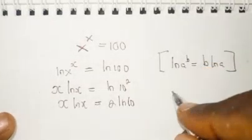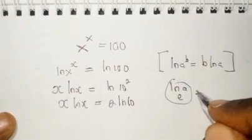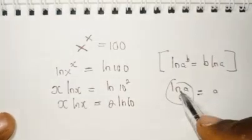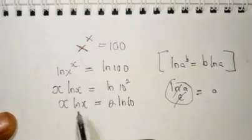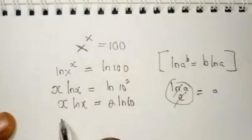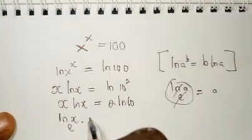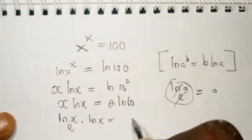I want us to know something: when you have the natural log of a with the base of e, this equals a because both cancel each other. Therefore, we can say this is x to the base e times the natural log of x equals 2 times the natural log of 10.